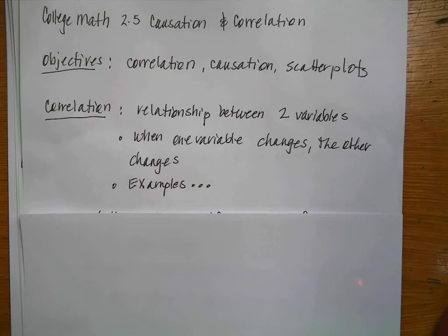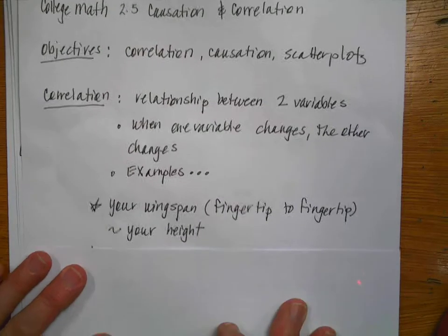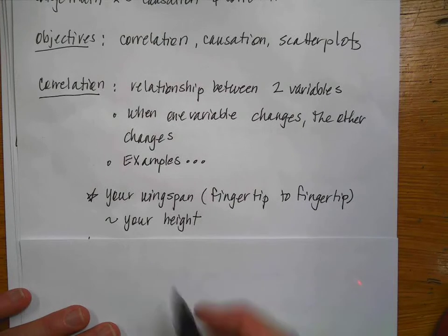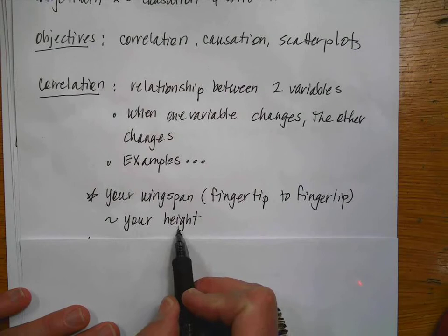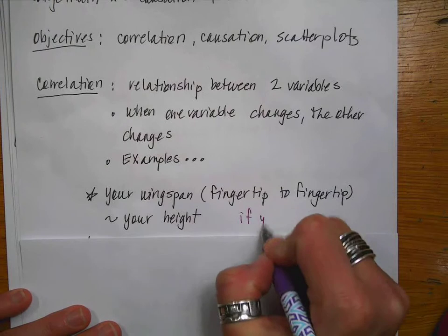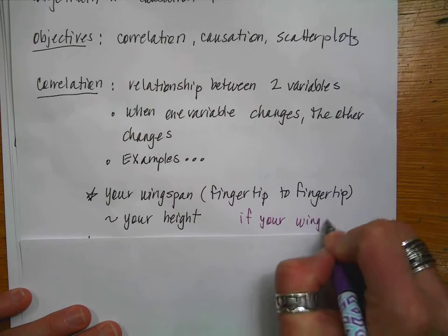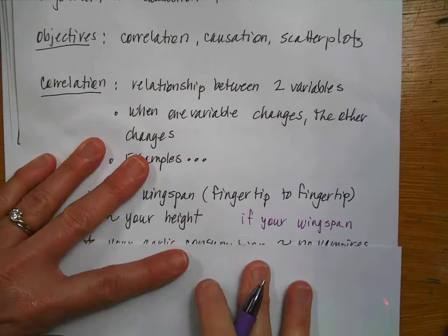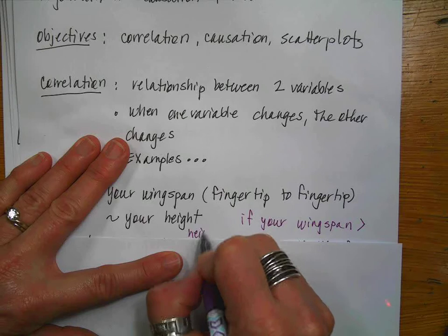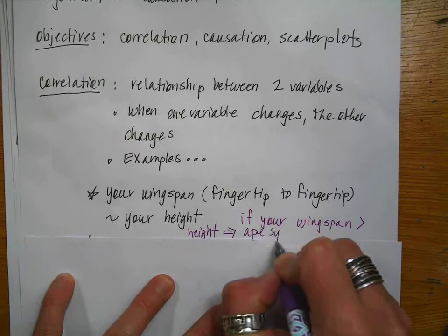Here are some examples of correlations. If your wingspan, which is your fingertip to your fingertip, we say that your wingspan is equal to your height. So if your wingspan is longer than your height, kind of entertaining, a little bit of levity, then we say you have ape syndrome.